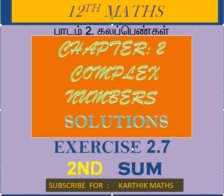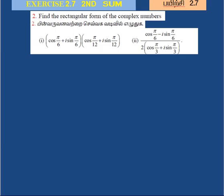The solution for x is 2.7. The rectangular formula is called 2 harmless numbers; the polar formula is called the rectangular formula. This is the most important thing we need to understand.